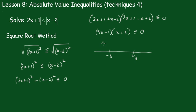Now we have a little quadratic inequality. The critical values are at minus 3 and one third. Drawing our little schematic parabola, we see it's negative in between, so x must lie between minus 3 and one third — as before.